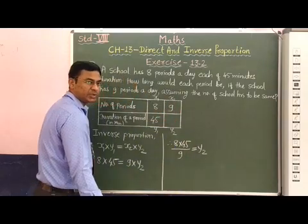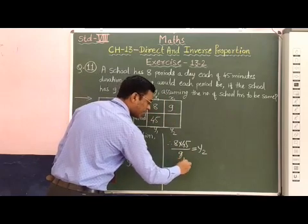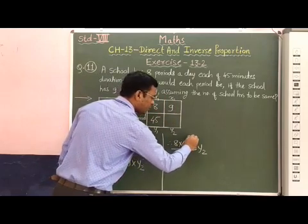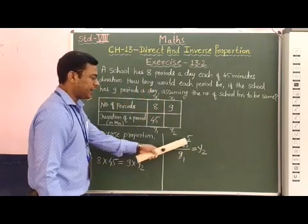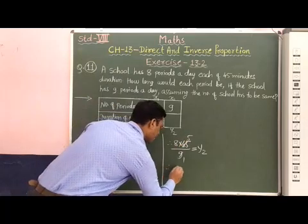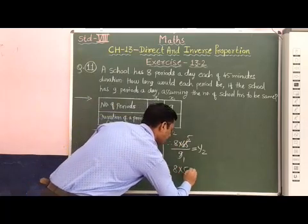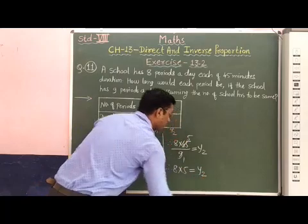8 × 45 divided by 9, which is equal to y2. Now 9 and 45, both are divisible by 9. 9 × 5 are 45. Now 8 × 5, therefore 8 × 5 = y2.